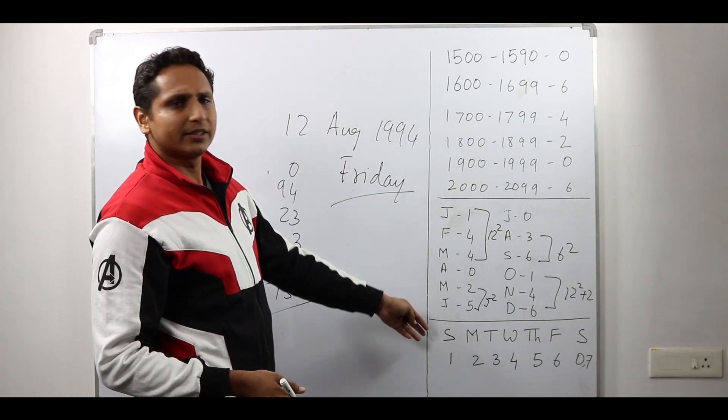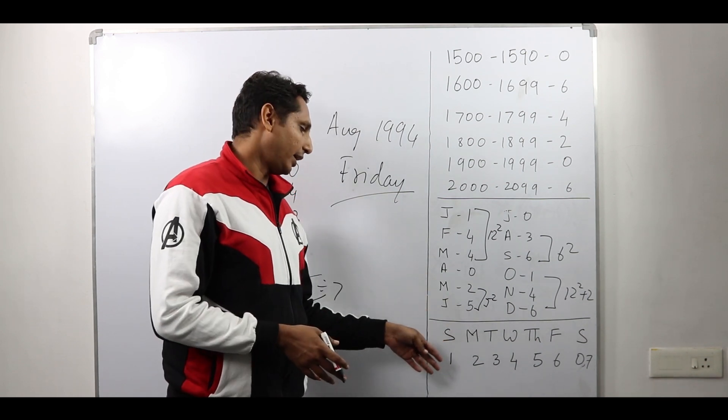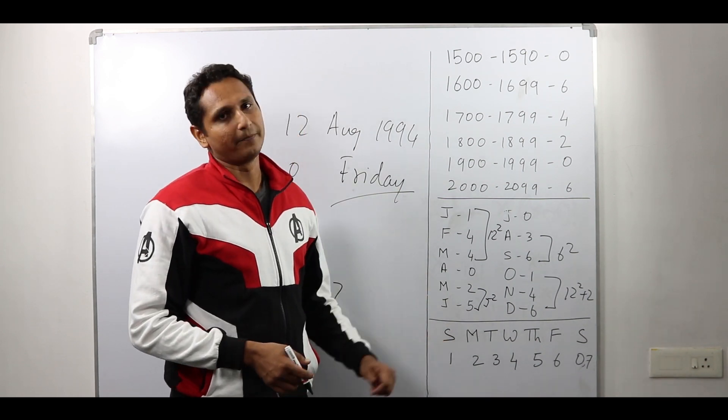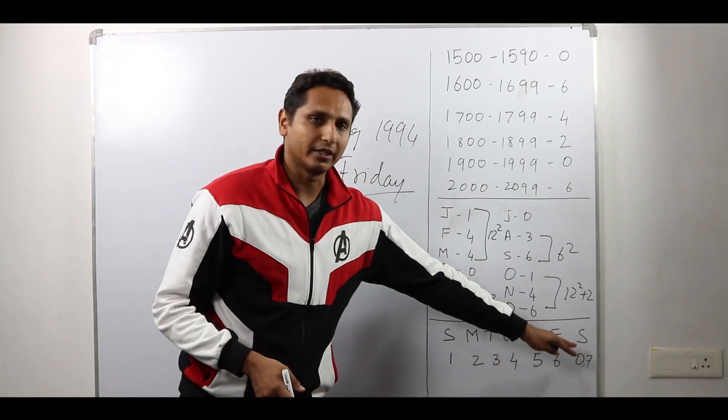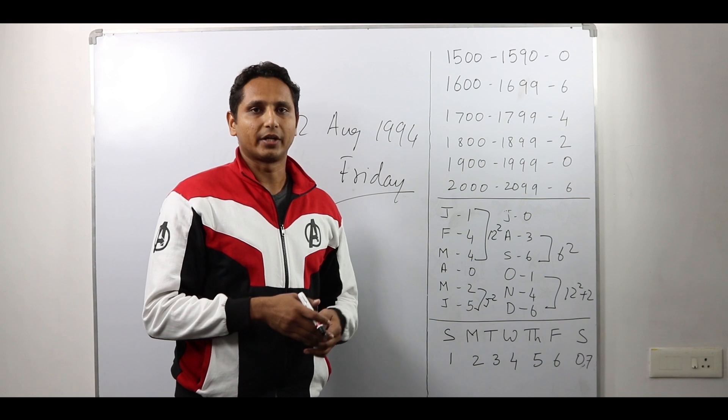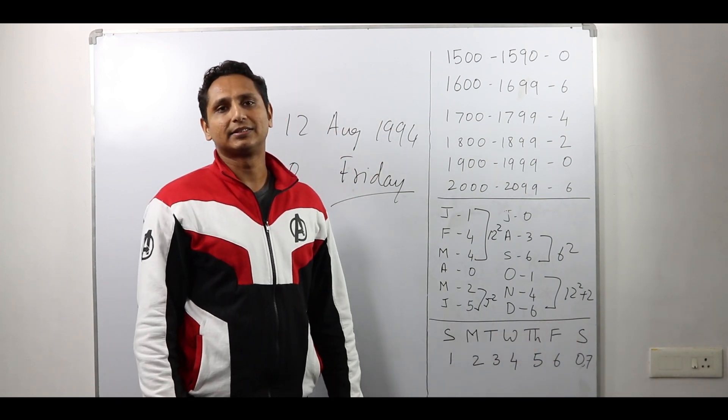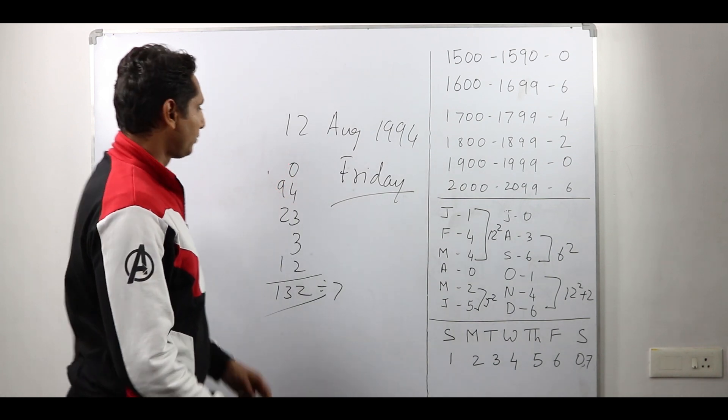And about the days, start with Sunday. This is Sunday by the way. So have Sunday as 1. And then move further. Whenever you don't get a remainder, whenever the remainder is 0 or 7 which means 0, the day will be Saturday. So that is what we have followed here.